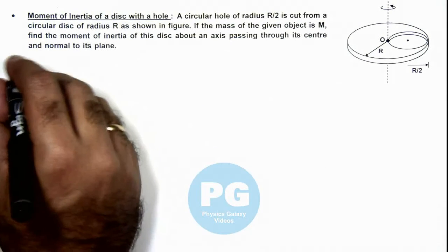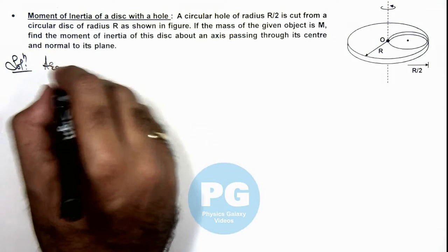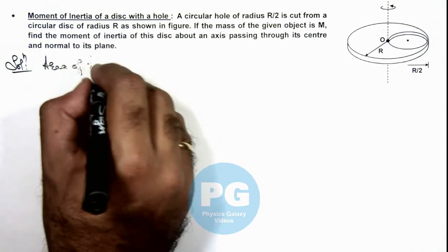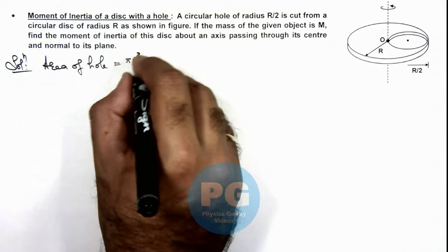Here first, we can see that the area of the hole in the disc is equal to πR²/4.